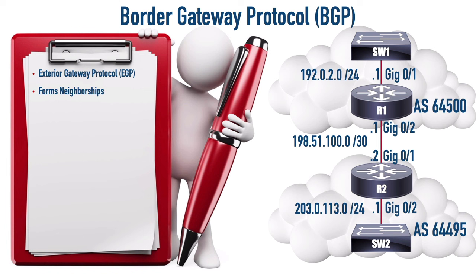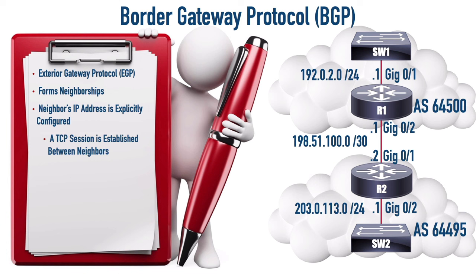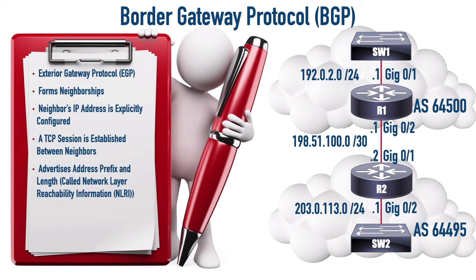Much like OSPF and EIGRP, we do form neighborships, but what is different is we need to specify the IP address of our neighbor. We're not going to be sending out multicast hello messages to dynamically form neighborships. Instead, I need to say I want to point to a neighbor that lives in this autonomous system and here is their IP address. BGP also establishes a TCP session between two routers using TCP port 179. When we talk about sending network information from one router to another, we call that NLRI - Network Layer Reachability Information.